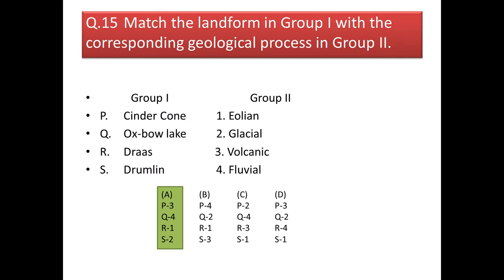Next question: match the landform in group 1 with the corresponding geological process in group 2. A cinder cone is a volcanic feature. An oxbow lake is obviously a fluvial feature. A draa is an aeolian feature. And a drumlin is a glacial feature. Our answer should be option A.